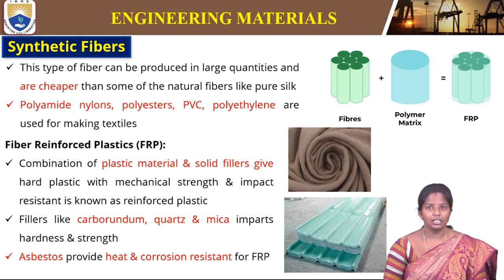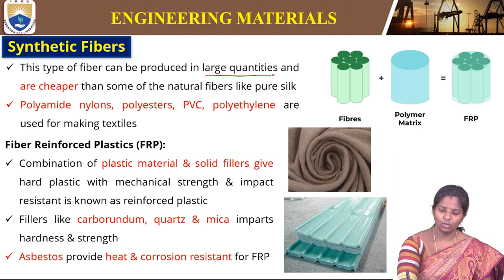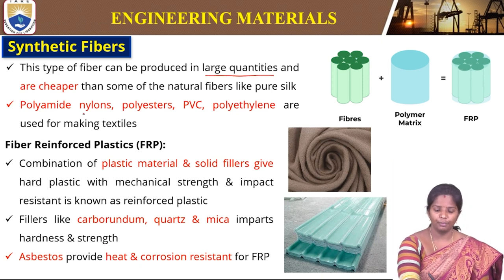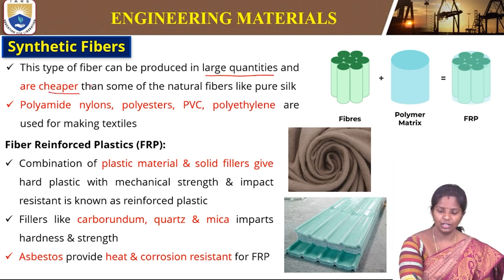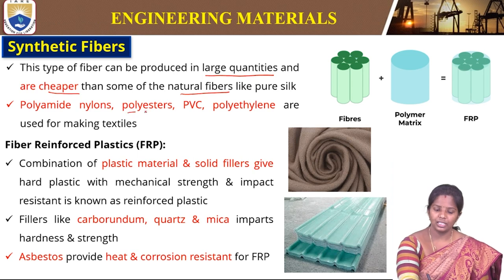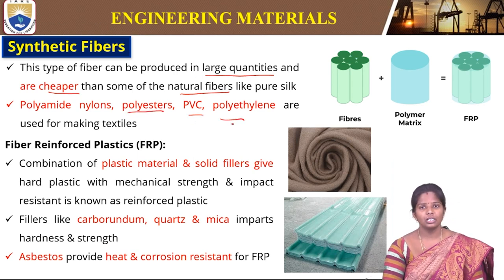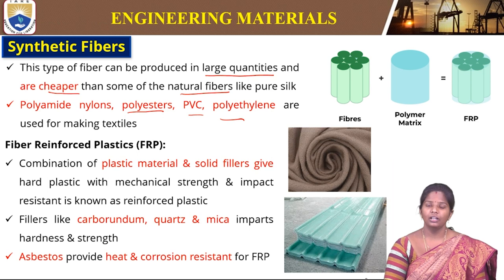Synthetic fibers are the other type of fibers. This type of fiber can be produced in large quantities and is cheaper when compared to natural fibers. For example, pure silk is very costly when compared to nylon, polyester, or PVC. These are some of the synthetic fibers that are used.